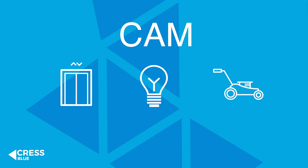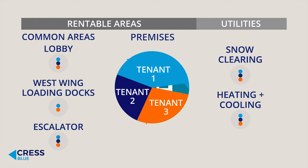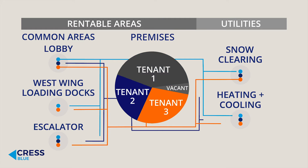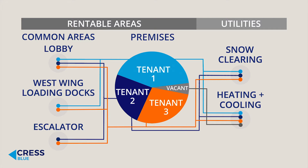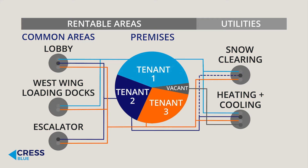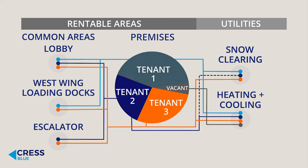Sounds simple, but calculating the additional rent for each tenant in a property or set of properties is complex. Let's say you have three tenants in your four-unit building. A ground floor tenant may not want to be charged for escalator maintenance, and no tenants want to pay to keep the pipes from freezing in the vacant unit. And one tenant is moving out halfway through snow clearing season. The property manager must allocate only the applicable operating costs in the correct proportion for each time period to each tenant.